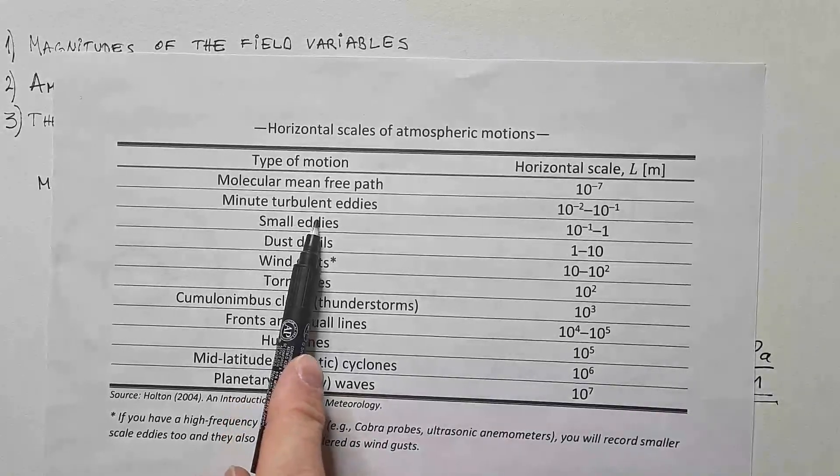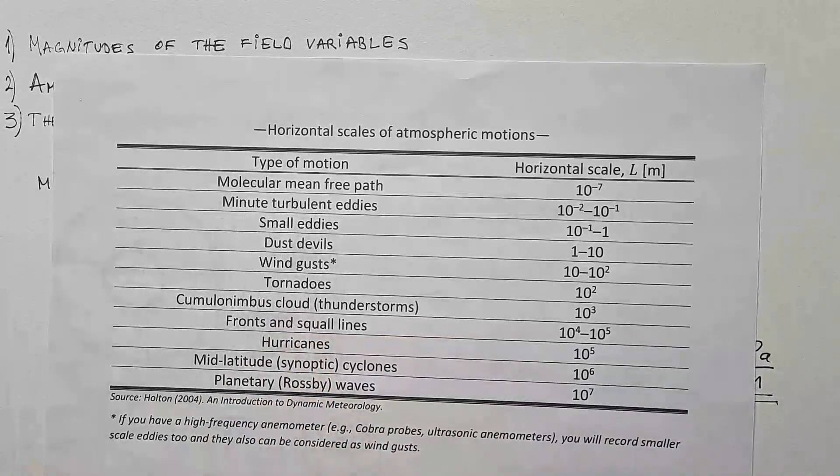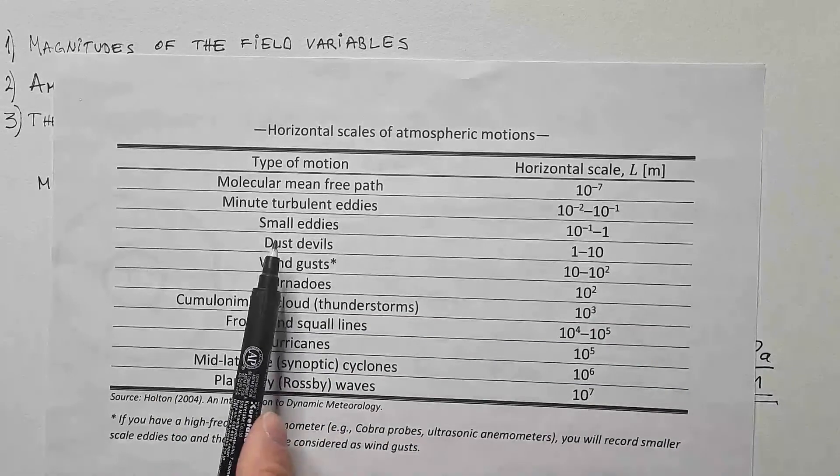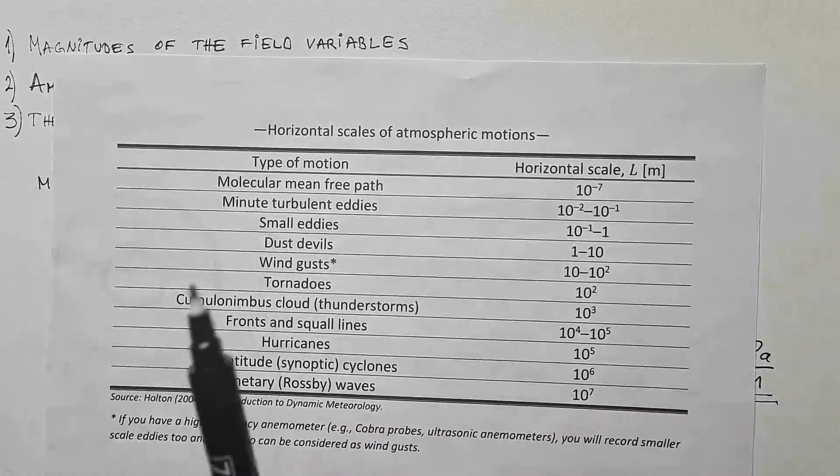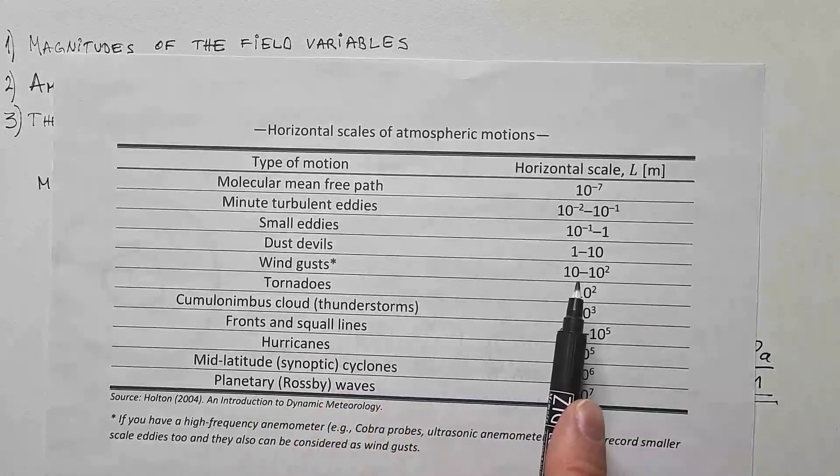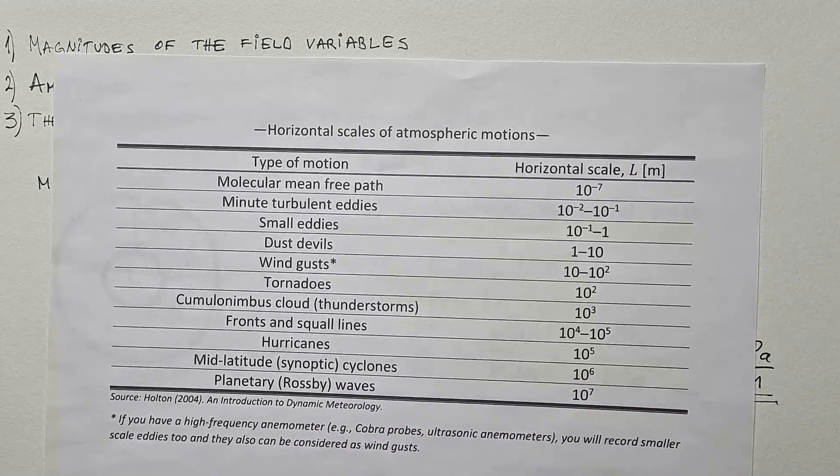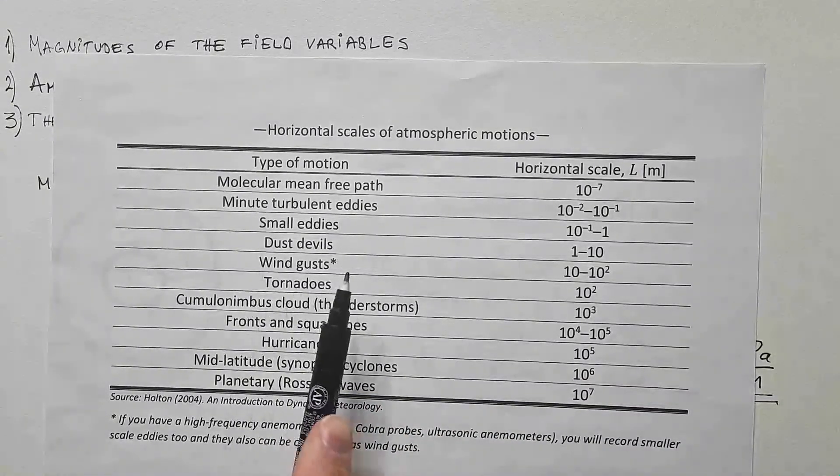Then we have small eddies, which are a little bit larger than these minute turbulent eddies, then dust devils, and so on. And then we have wind gusts, that have typical horizontal scales, 10 meters to 100 meters. Now here, I put star because I partially, not disagree, but I want to add more to this Holton's argument.